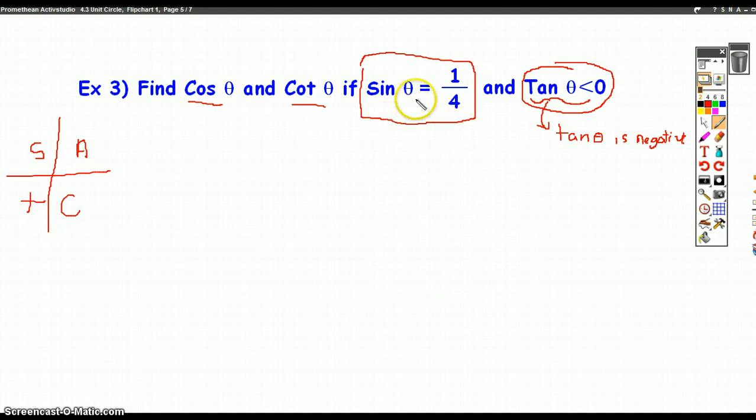We're told that the sine is 1 over 4, and if you look at 1 over 4, that's a positive ratio. So that narrows down the two quadrants we could possibly be in. Sine is positive in quadrant 1 because all the trig functions are positive there, and it's positive in quadrant 2 where only sine is positive.